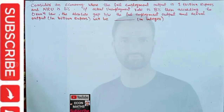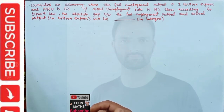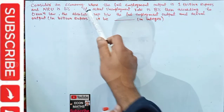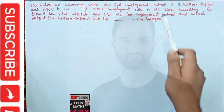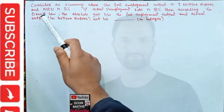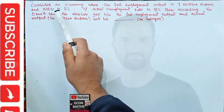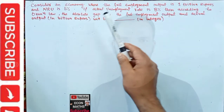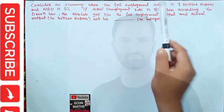Hi, this is Halal. In this video on the mathematical economics series, we will try to solve a problem that was asked in IIT JAM economics. It involves Okun's Law. Consider an economy where the full employment output is given as 1 trillion rupees and the natural rate of unemployment in this economy is 6%.